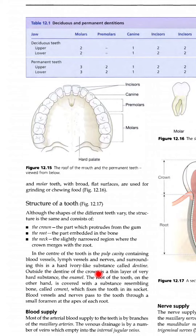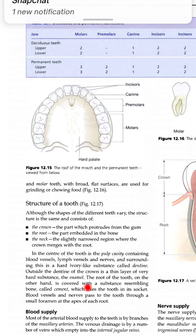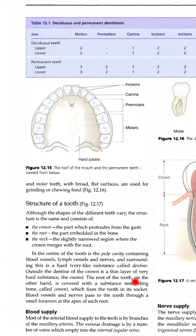Blood vessels, lymph vessels और nerves को जिसने cover किया होता है — वो ivory-like substance है जिसको dentine बोलते हैं। Outside the dentine of the crown is a thin layer of very hard substance — the enamel — इनके बाहर वाली thin layer को हम enamel बोलते हैं। The root of the tooth, on the other hand, is covered with a substance resembling bone called cement — जो root वाला part होता है उसमें cement होता है, which fixes the tooth in its socket।